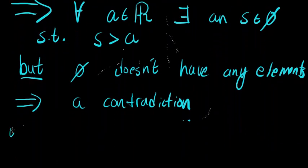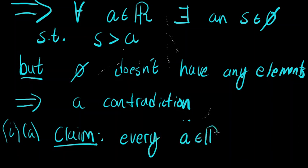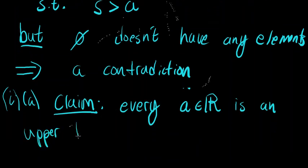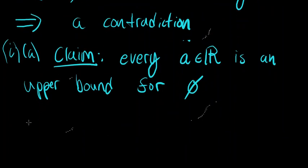Now, before we go into step two, where we determine if the empty set has a least upper bound or not, we're going to prove that every element in the real numbers is an upper bound for the empty set. Claim: every A in R is an upper bound for the empty set. I'm going to approach this investigation via a proof by contradiction.